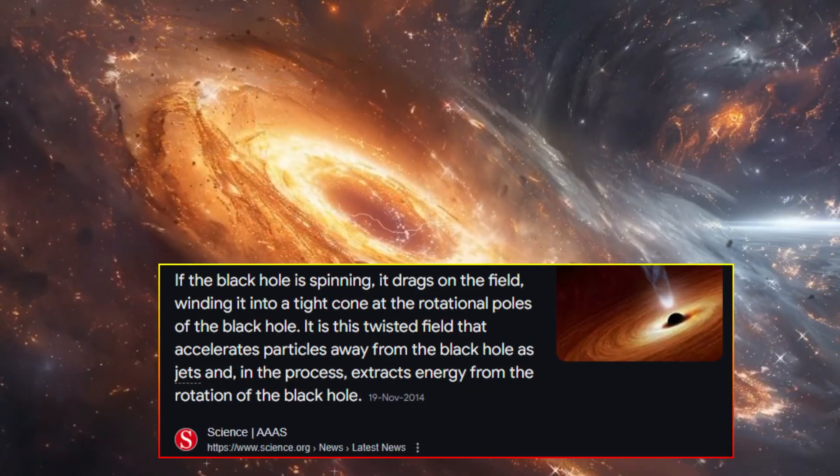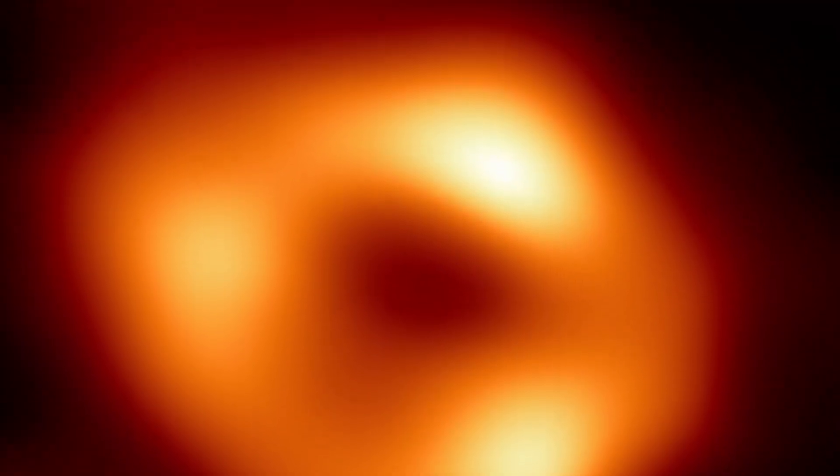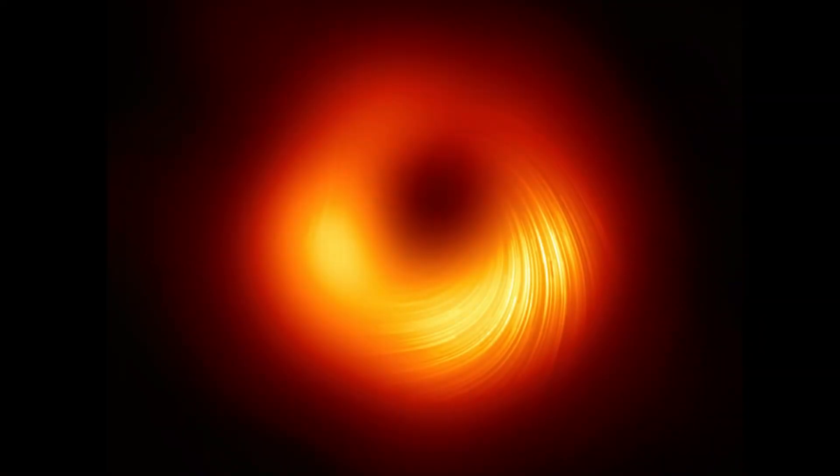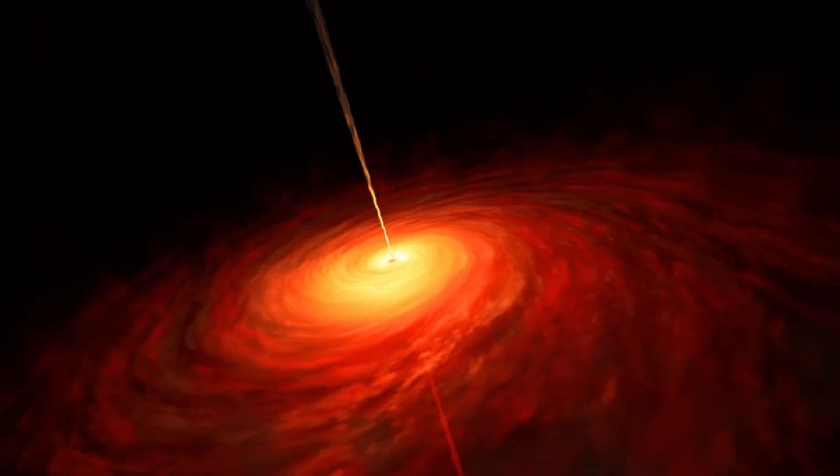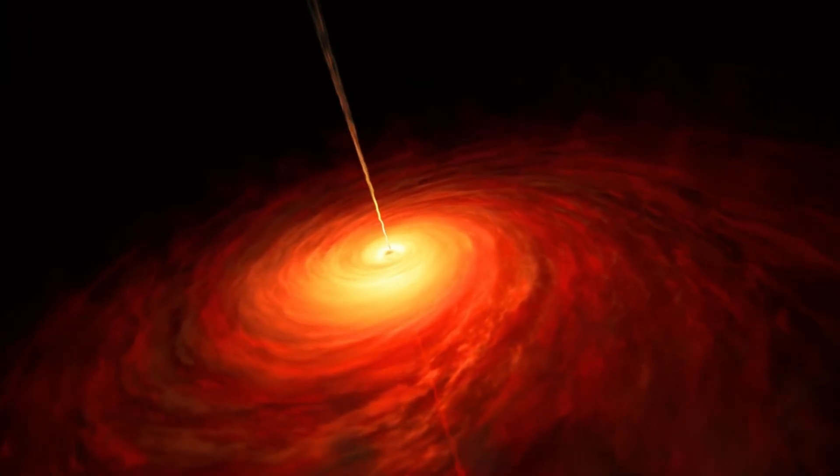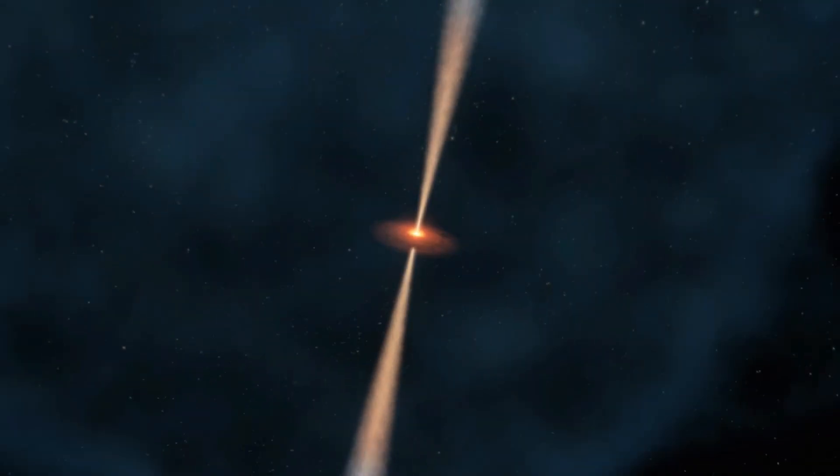The black hole jet theory. One possible explanation is that our galaxy's supermassive black hole, Sagittarius A star, experienced a dramatic eruption millions of years ago. In this scenario, the black hole may have undergone a period of intense activity, releasing a powerful jet of energy into space.